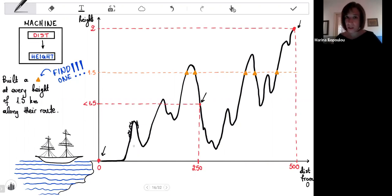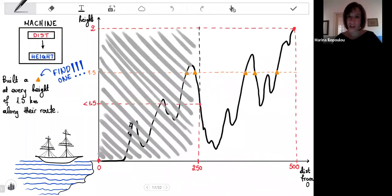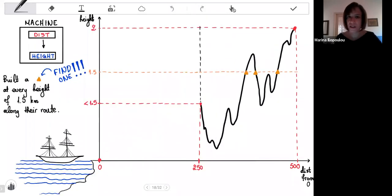They notice that they start below height 1.5 and at the midpoint, they're still below 1.5. There is no guarantee that in the meantime they went all the way up to 1.5. So they cannot guarantee that there will be a shelter in the first half of this route. They notice that in the second half, above the midpoint, the height is below 1.5, but when they reach the end, it is above 1.5. So they know that in the meantime, they must have crossed height 1.5 and therefore built a shelter there.